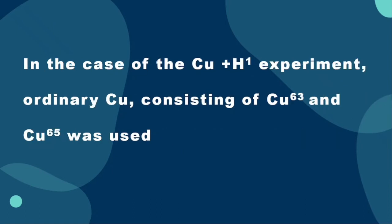In the case of the copper plus hydrogen one experiment, ordinary copper consisting of copper-63 which was present in 69.1 percent and copper-65 which was present in 30.9 percent was used. Copper-65 produces the 250-day zinc-65 and the 12.8-hour copper-64 activities by proton bombardment. The copper-64 activity interferes with the measurement of the 9.5-hour activity of zinc-62. This difficulty was eliminated in this experiment by the use of 300 mg per centimeter square aluminum absorber in front of the counter.